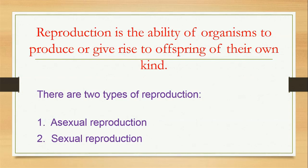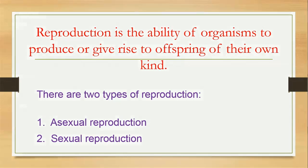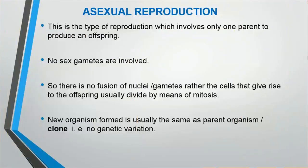So it is wrong to generalize reproduction as the ability of organisms to give birth. The best way to define reproduction is: reproduction is the ability of organisms to produce or give rise to offspring of their own kind, or of the same species. There are two types of reproduction: the first is asexual reproduction and the second is sexual reproduction.